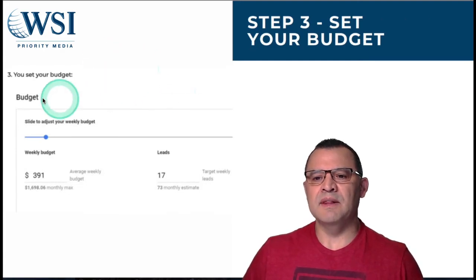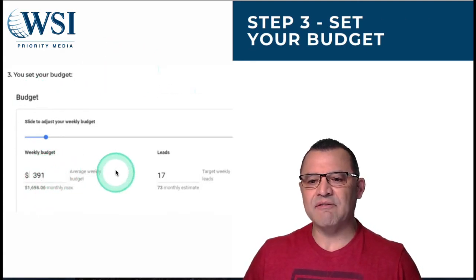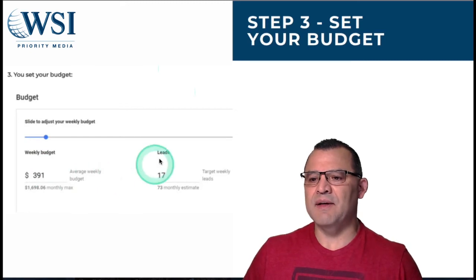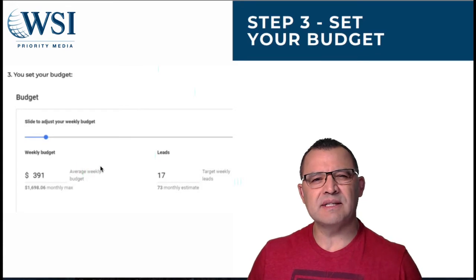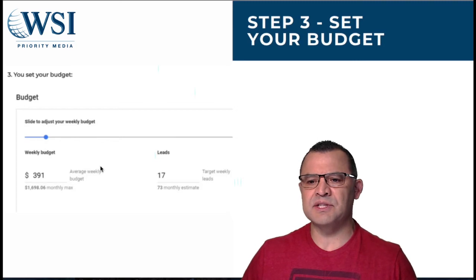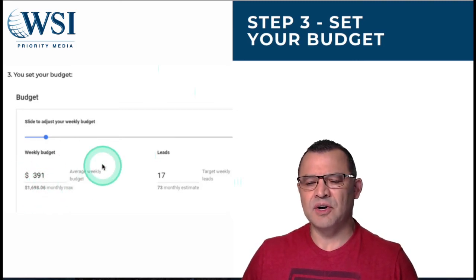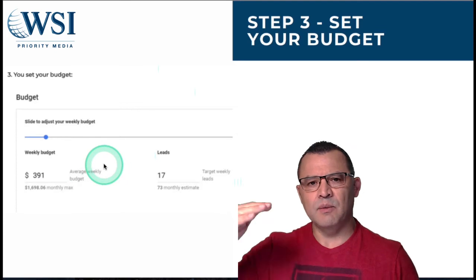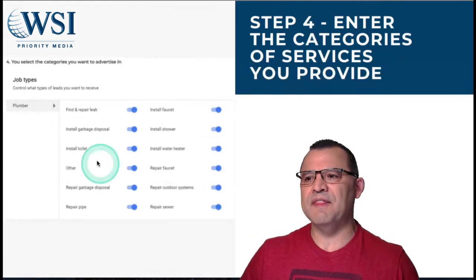Step number three in the setup process: it'll ask you to go ahead and set up your average weekly budget and then the target number of leads. It estimates usually about $20 to $30 per lead in plumbing — each industry varies a little bit as far as what the lead costs are. Right here, a 391 would be about $1,600, and it will vary, but you'll never pay more than what that amount is.